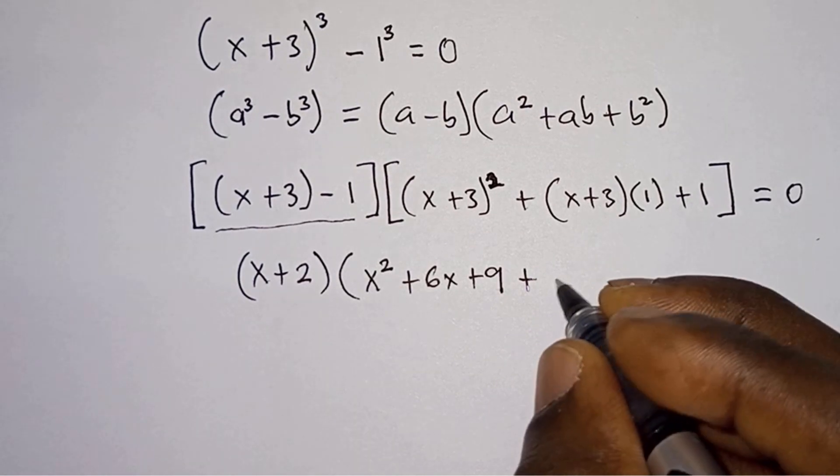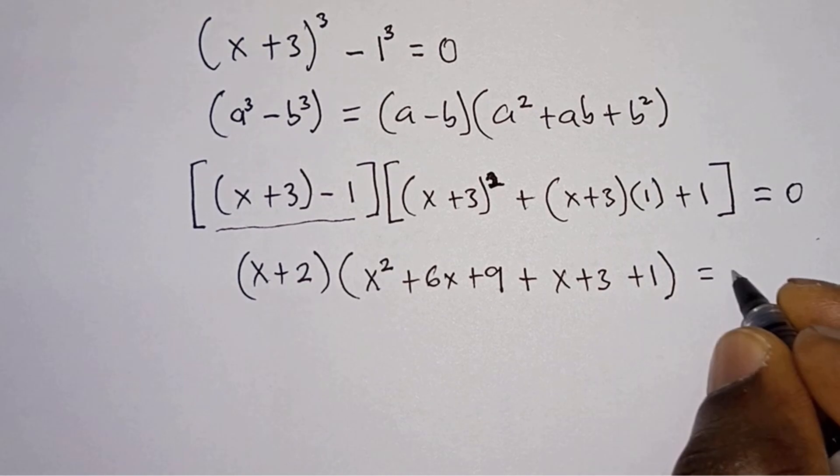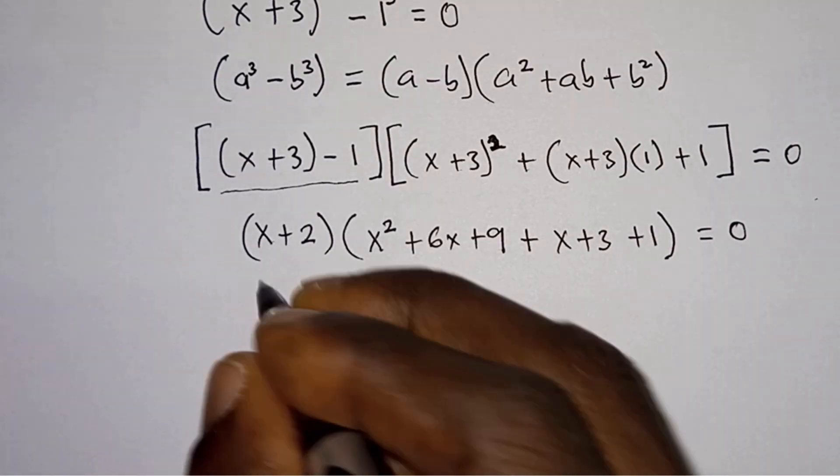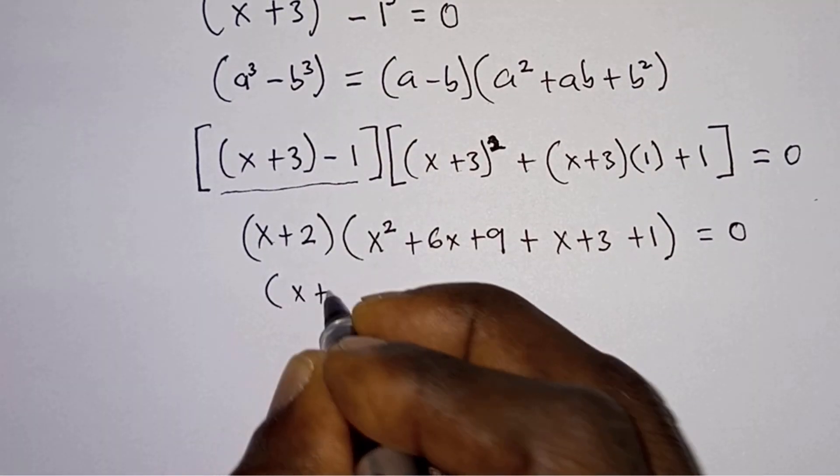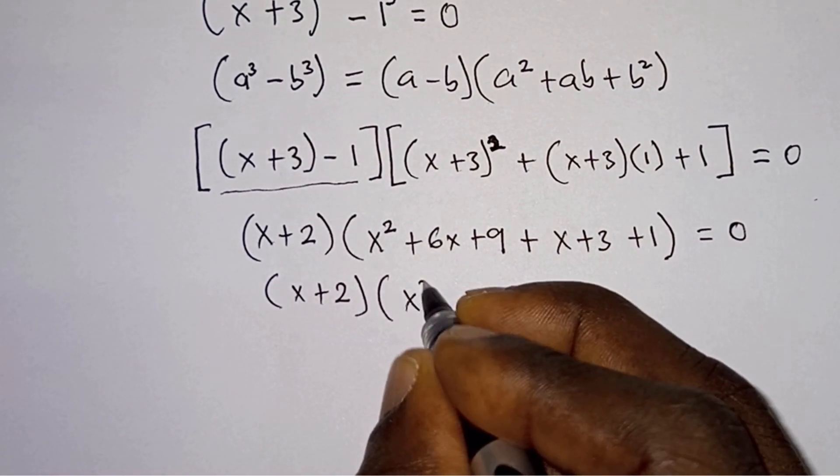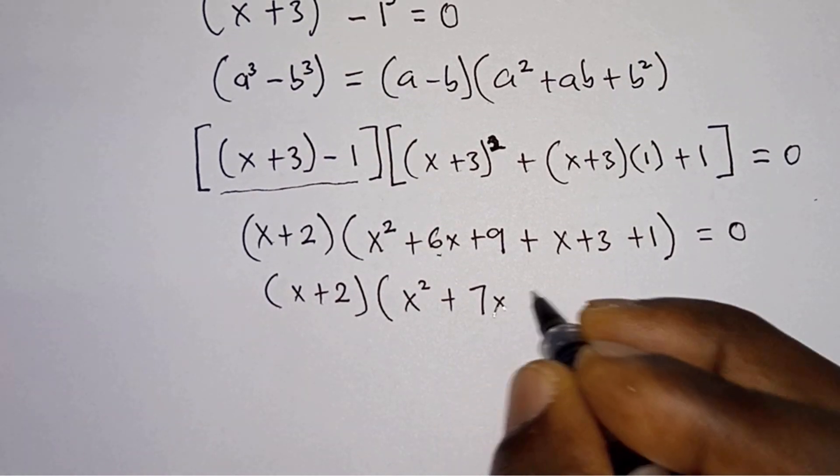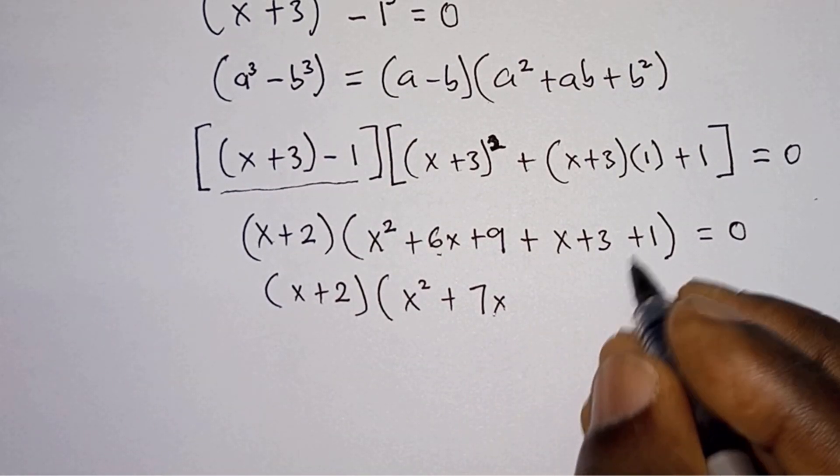Plus what we have here: x plus 3 plus 1, and this equals 0. And we can simplify this further. We have x plus 2 times x² plus 6x plus x, that is 7x, plus 9 plus 3 plus 1, that is 13, and this equals 0.